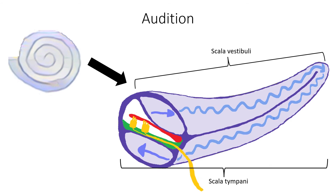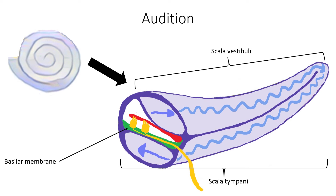Each hair cell is attached to the auditory nerve. As vibrations of the ossicles travel through the oval window, the fluid of scala vestibuli and scala tympani move in a wave-like motion. Keep in mind that the frequency of fluid waves matches the frequency of sound waves. Fluid waves of scala vestibuli and scala tympani cause the basilar membrane to move at a specific location depending on the frequency of waves.